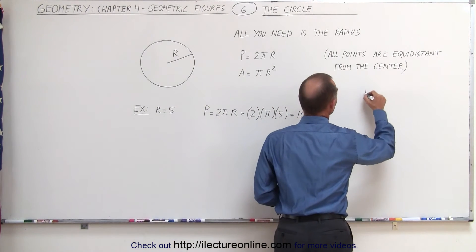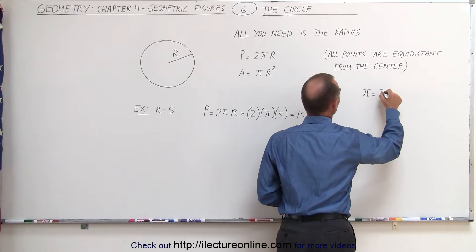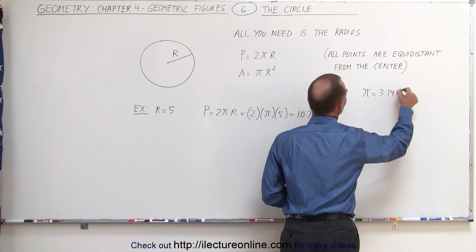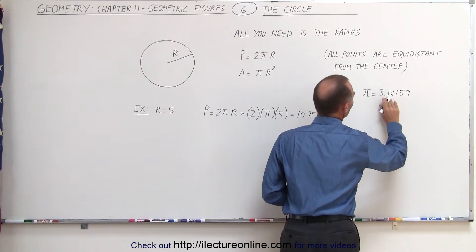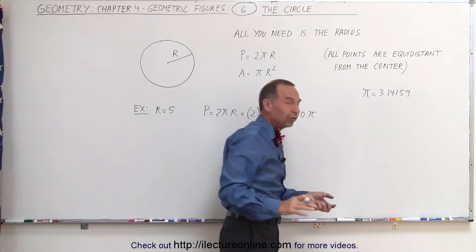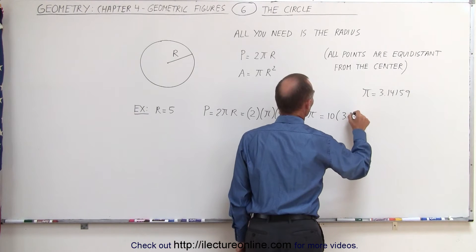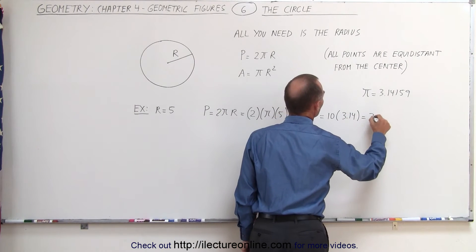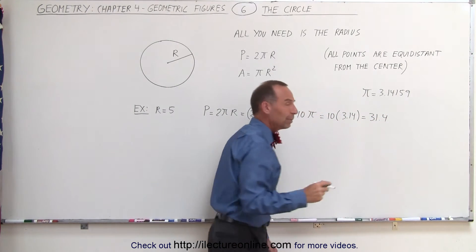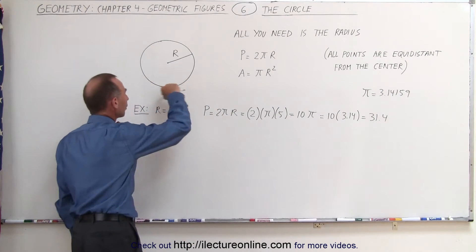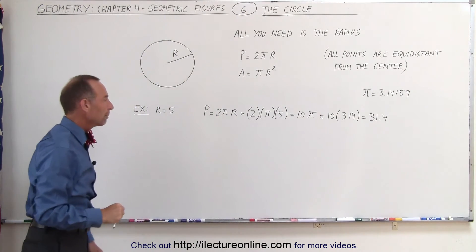And of course, π can be found from a calculator or simply can be approximated. You know that π is equal to 3.14159, but if two decimal places is sufficient you can say that this is equal to 10 times 3.14, which is equal to 31.4. So that would be the length of going all the way around the circle, called the perimeter.